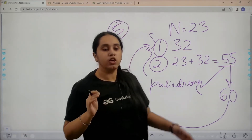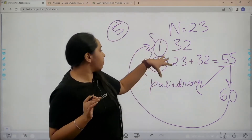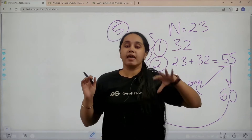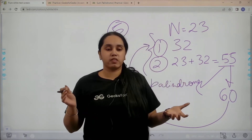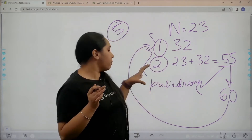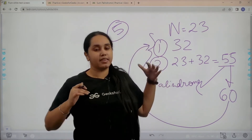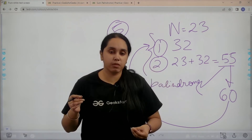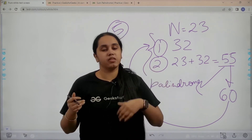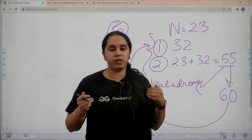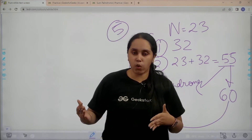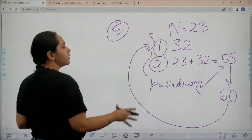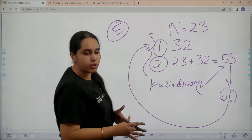There is a limit — you can only repeat these steps five times. If within those five steps it becomes a palindrome, then it's fine. But if it doesn't become a palindrome, you stop there because five iterations are over. I hope the concept is clear.